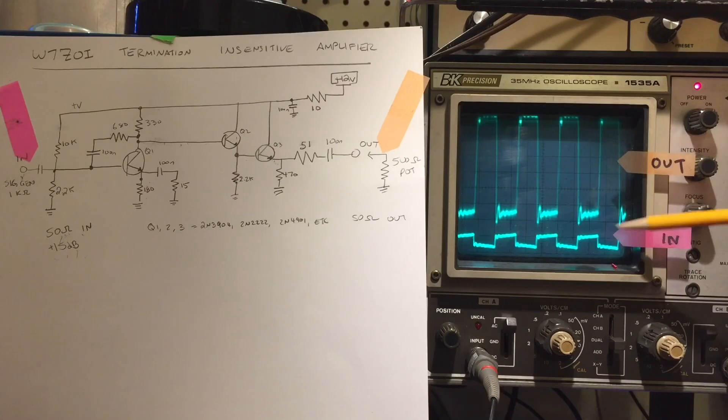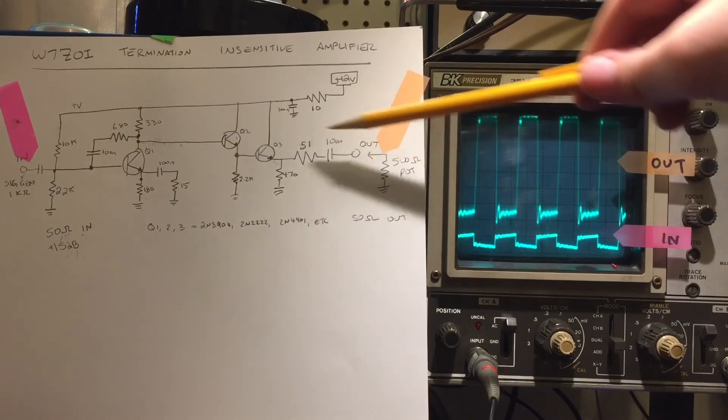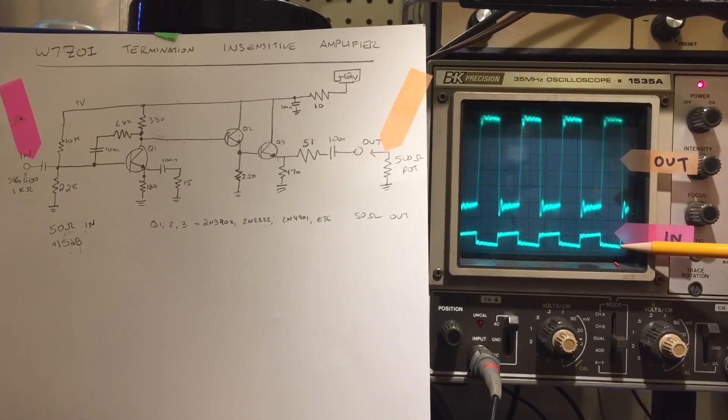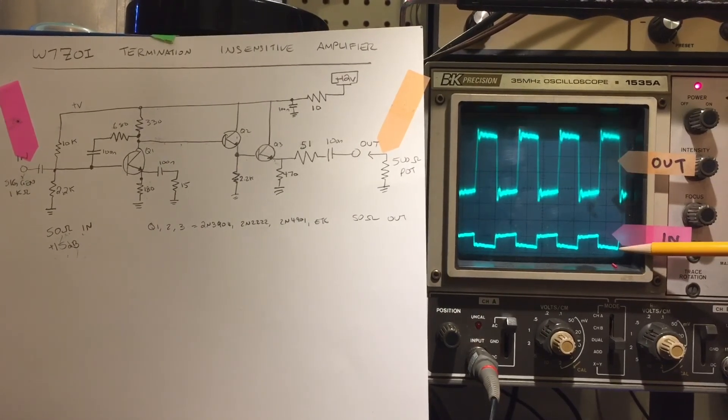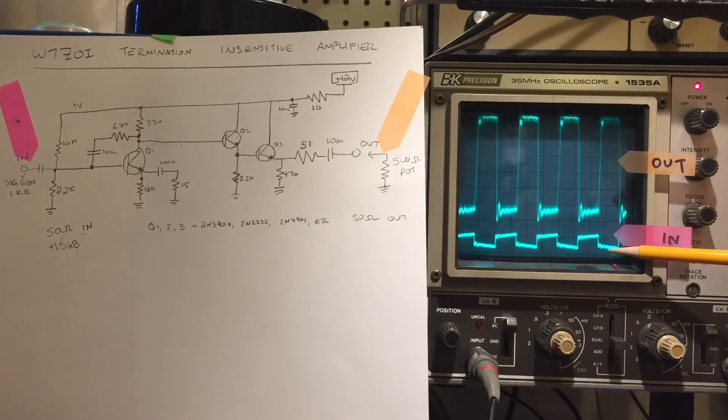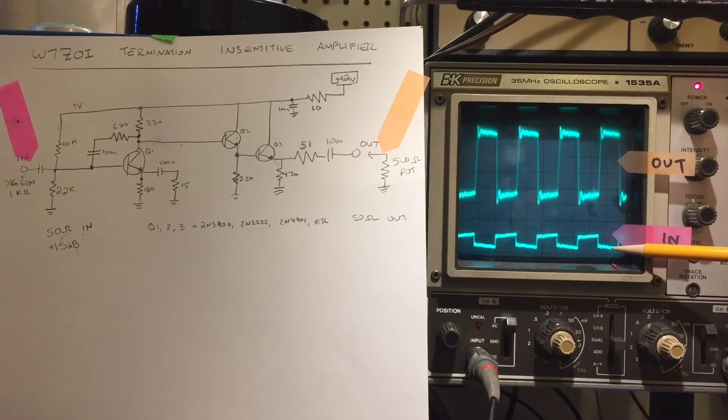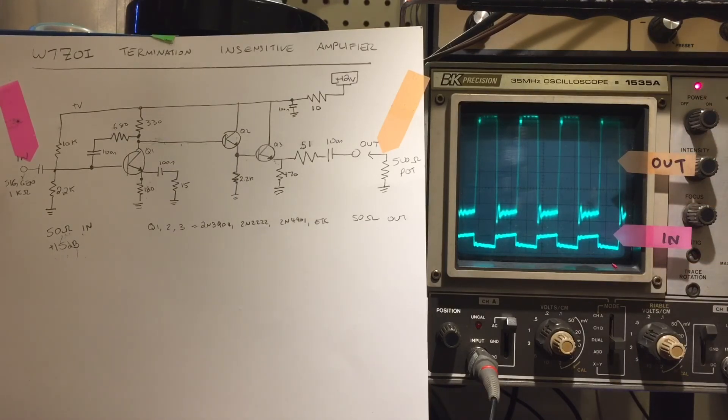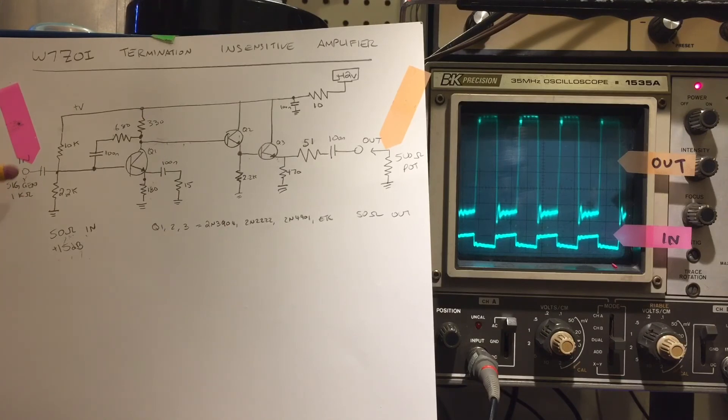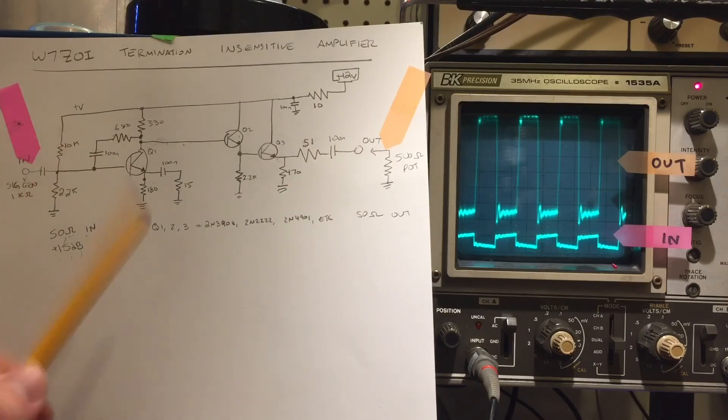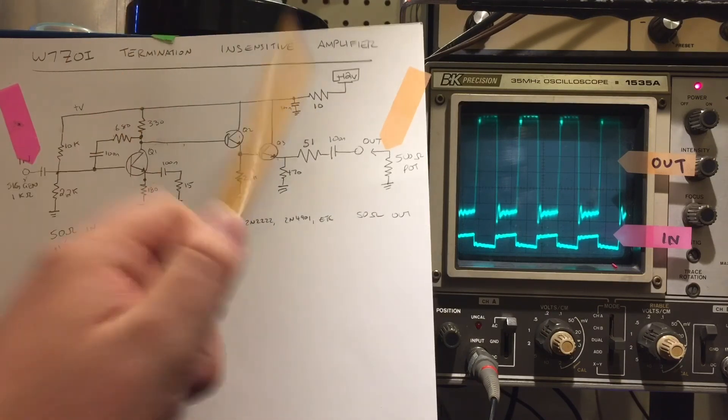But notice that as I adjust this pot, in other words, change the loading on this amplifier, changing the impedance that this output is seeing, this input trace hardly changes at all. It's not perfect. I mean, nothing's perfect in the real world. But instead of that extreme loading we were seeing with just the plain common emitter amplifier, we now have a very solid impedance being seen by our signal generator. Now that doesn't necessarily mean that the impedances are matched. In fact, with my signal generator set up for about a one kilo ohm input source impedance, and its amplifier providing a 50 ohm match, the match is not good, but it is consistent. And that is the point of termination insensitive amplifiers.